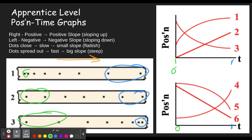Number one here starts out close together, and we know close together means slow, which means a flat line. The most important thing first: it's going to the right, which means sloping up. Number one is sloping up, two is sloping up, three is sloping down, four is sloping up, five and six are sloping down. So the three dot diagrams here — numbers one, two, and three — must match graphs one, two, and four.